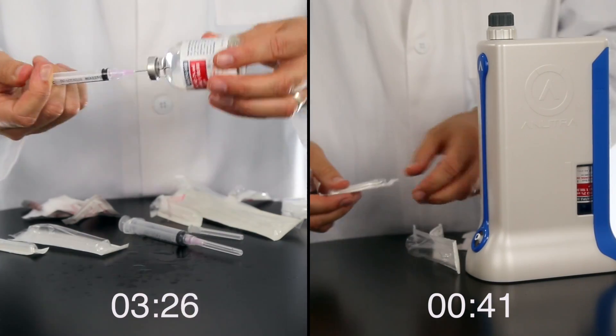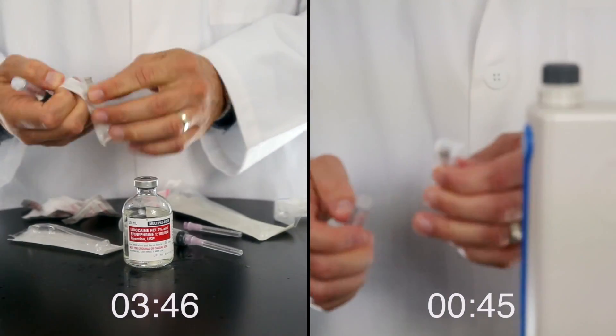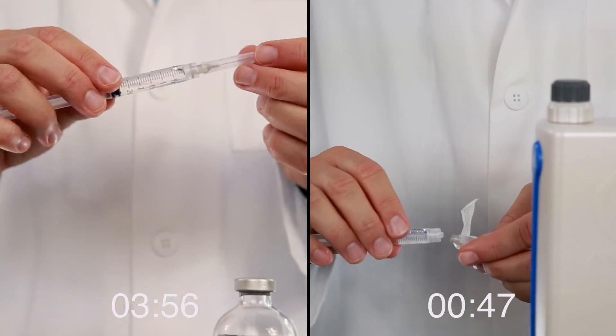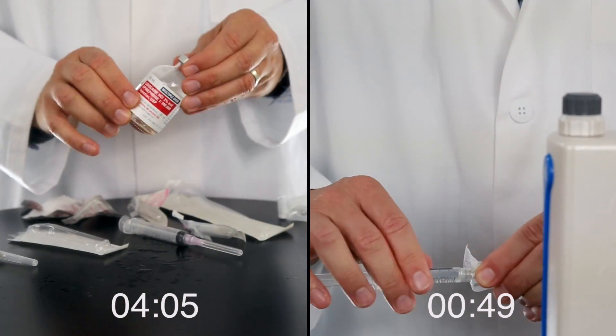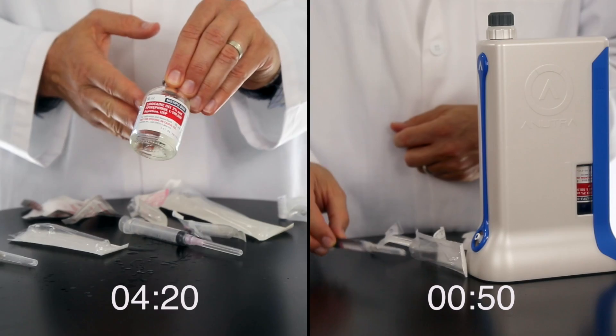Simply remove the syringe, attach your needle of choice, this happens to be a 27 gauge, 1 inch. Your buffered lidocaine is ready for your procedure.